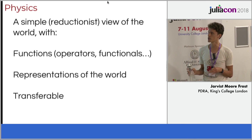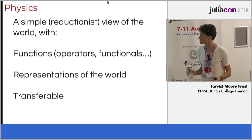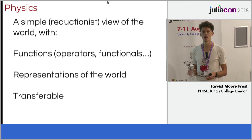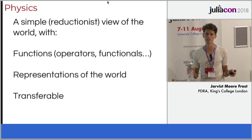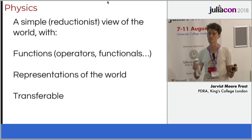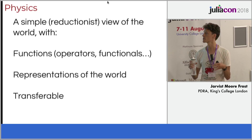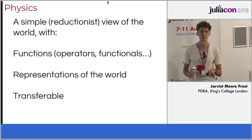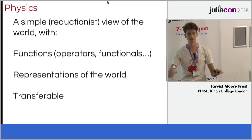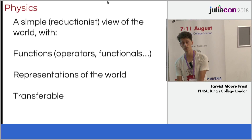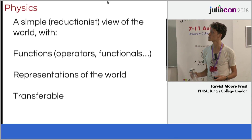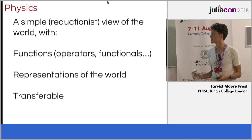I think physics and Julia actually have a very similar representation of the world. Physics is a very reductionist view: we have functions, operators, and functionals, and a representation of the world — vectors, quaternions, tensors — all coming from physics and our attempt to explain what's going on in the simplest manner. The reason we do all of this is that we believe physics is very transferable: once you break it down to universal laws, you apply them to lots of different systems.